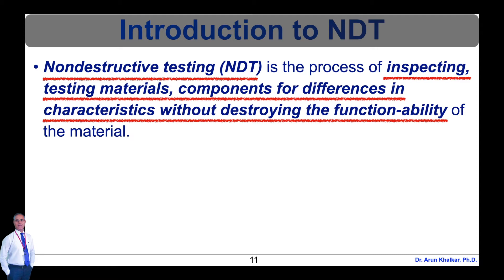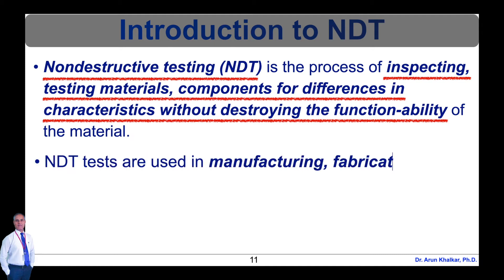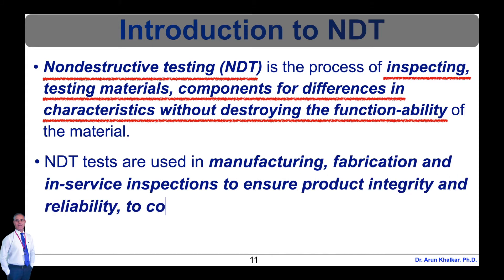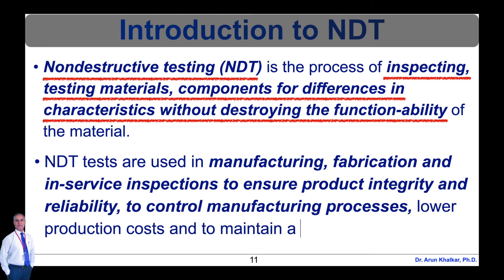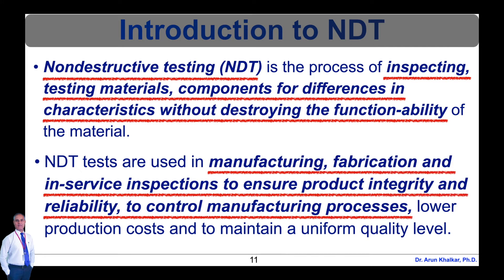These destructive tests are often used to determine the physical properties of materials such as impact resistance, ductility, yield and ultimate tensile strength, fracture toughness and fatigue strength, but discontinuities and differences in material characteristics are more effectively found by NDT. Today, modern non-destructive tests are used in manufacturing, fabrication and in-service inspections to ensure product integrity and reliability, to control manufacturing processes, lower production costs, and to maintain a uniform quality level.